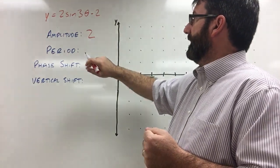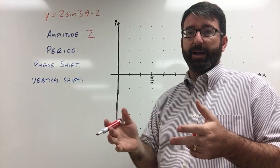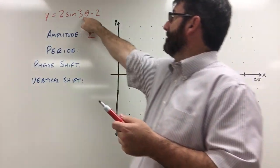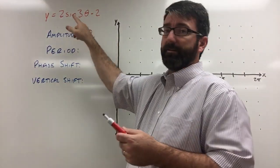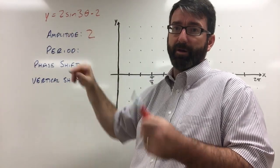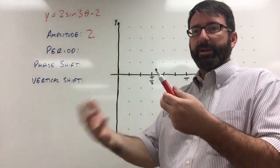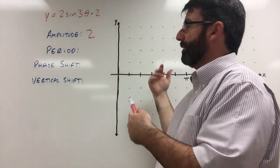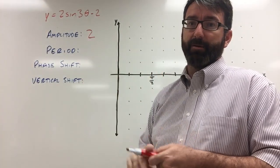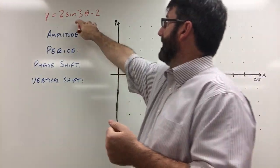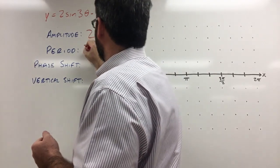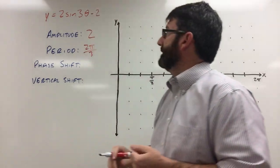The period, the normal period for a sine function is 2 pi, but then if there's a coefficient in front of our theta, if we see some number other than 1 in front of our theta, we need to divide our normal period of 2 pi by that number. So here we've got 2 pi divided by 3 is going to be our period.